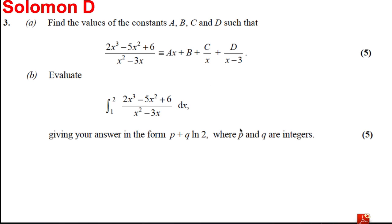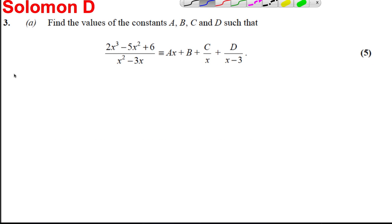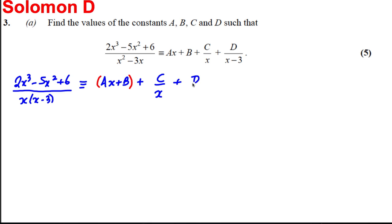Let's write down that 2X³ - 5X² + 6 all over X(X - 3). It's going to be identical to AX + B. Now it's important here to put brackets around this. Brackets go around that, plus C over X plus D over X - 3.